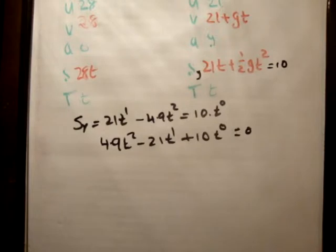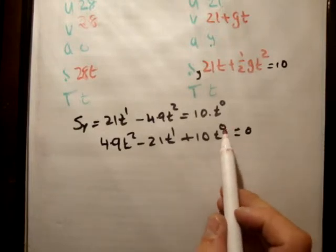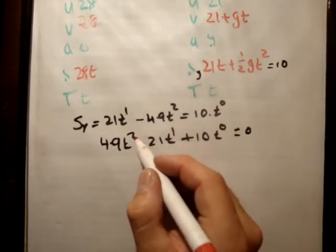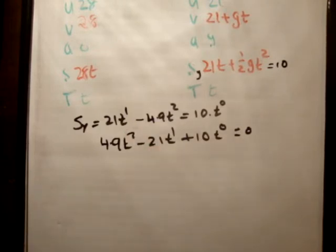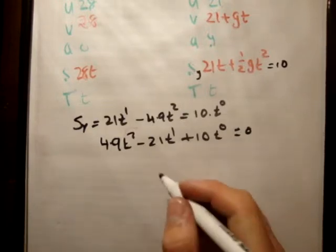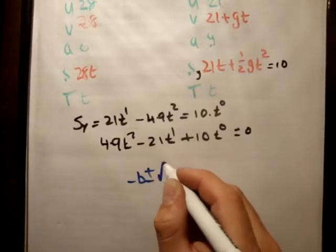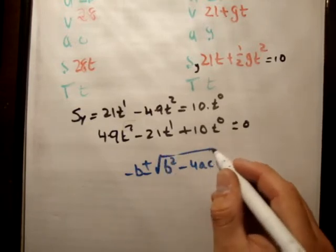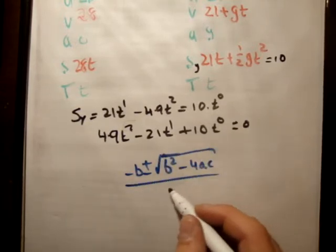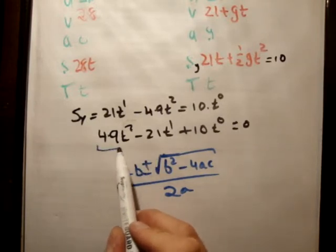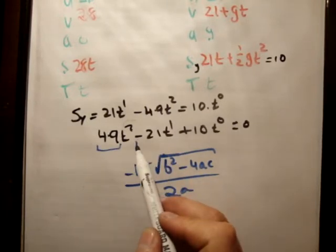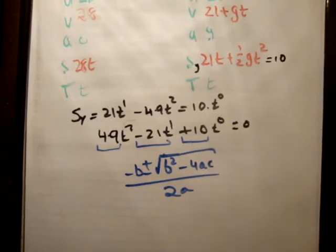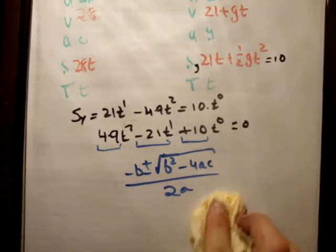A polynomial is something where you have powers. In this case we have 0, 1 and 2. The highest power is 2. So the order or the degree of this is 2 and we call a polynomial of degree 2 a quadratic. In order to solve that, you use the formula minus b plus or minus square root of b squared minus 4ac over 2a. Where in this case a is equal to plus 4.9, b is equal to minus 21 and c is equal to plus 10.